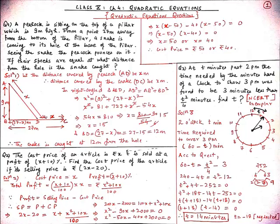So the distance between the hole and the point at which the peacock caught the snake is BD = 27 − x = 27 − 15 = 12 meters. Therefore, the snake is caught at 12 meters distance from the hole.